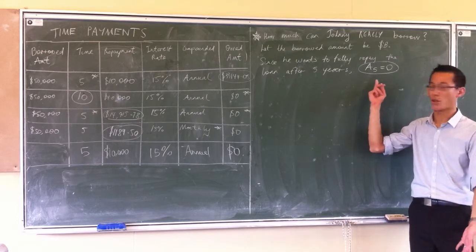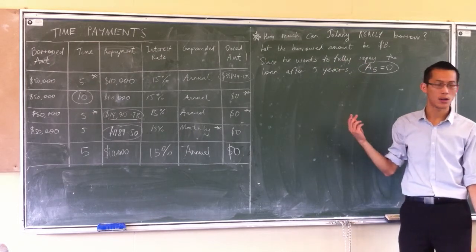Why is A5 equal to 0? Because he wants to fully repay the loan after 5 years, alright.